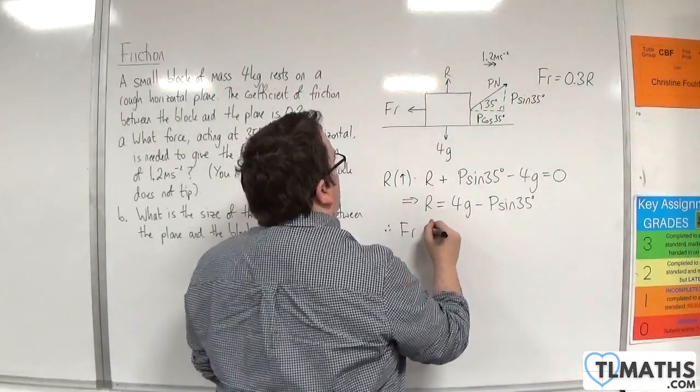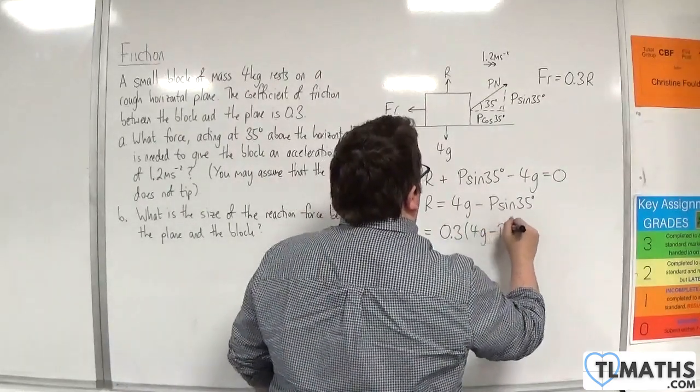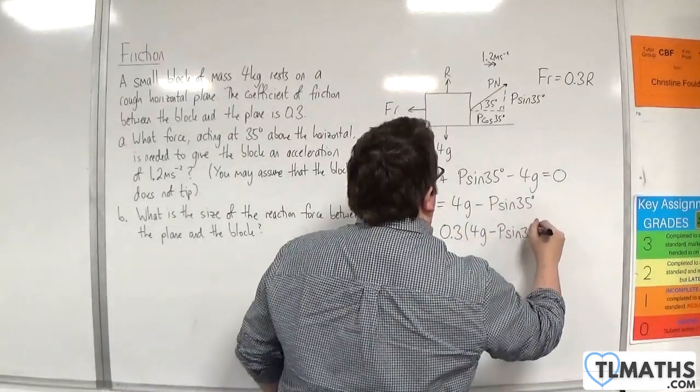So the friction is going to be equal to 0.3 times 4G take away P sin 35.